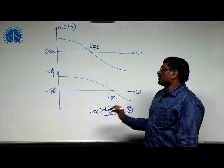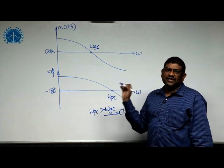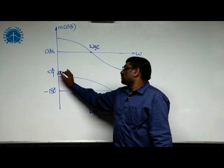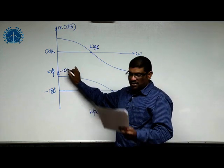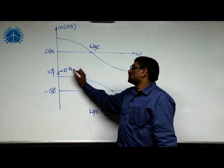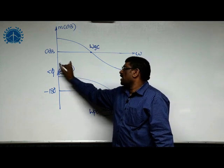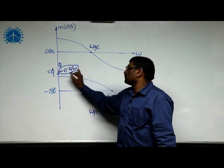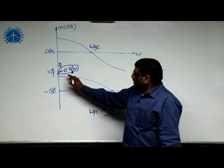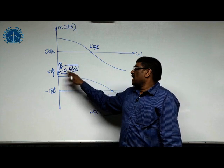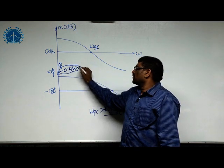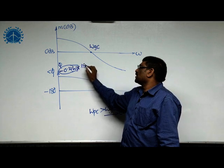To this system we are adding a transportation delay system having a term of e^(-0.4s). That means the angle which is going to be added is minus 0.4 omega to the phase plot. We are adding an angle of minus 0.4 omega, or in degrees, minus 0.4 omega times 180 by pi.